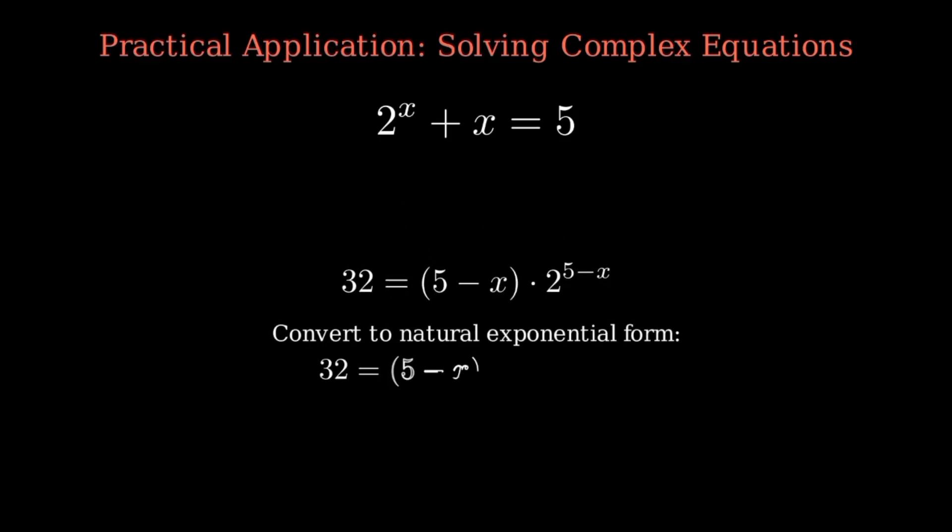Now you might be wondering, this is all very interesting, but when would I actually use this in practice? Let's say you need to solve this equation: 2 to the x plus x equals 5. We can rearrange this to 2 to the x equals 5 minus x, then manipulate it algebraically. But eventually, we reach a point where we have an expression involving both exponential and polynomial terms mixed together. When we convert everything to the natural exponential form, we can see that this equation naturally leads to an expression involving the W function.